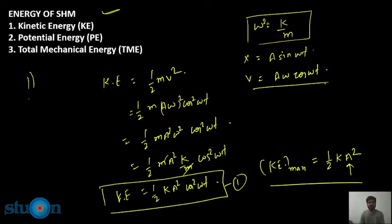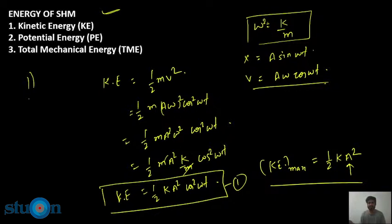In the previous lecture, we talked about the energy of SHM — kinetic energy and potential energy of a particle doing SHM. The sum of potential energy and kinetic energy, which is the total energy, is a constant number. I hope that you can recall kinetic energy and potential energy, and energy conservation.